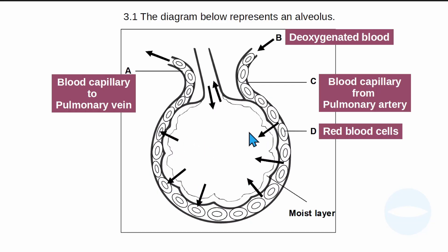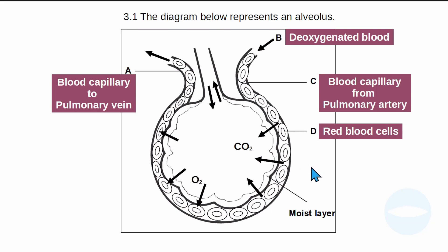These arrows represent gaseous exchange between the alveolus and the blood capillary. The first arrow represents carbon dioxide — carbon dioxide moves from the blood capillaries to the alveolus by the process of concentration gradient. The concentration of CO₂ is high in the blood capillary and low in the alveolus sac, so it diffuses out. Oxygen works in the opposite direction: oxygen is low in the blood capillary and high in the alveolus sac, so oxygen diffuses from the alveolus sac into the blood capillaries.